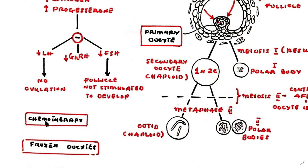Chemotherapy and radiotherapy can destroy primordial ovarian follicles. There is a finite reserve of oocytes formed prenatally which cannot be replenished after treatment with chemotherapy; therefore, preservation of oocytes before treatment begins should be considered. Frozen oocytes may be used for in vitro fertilization at a later date if the patient becomes infertile.